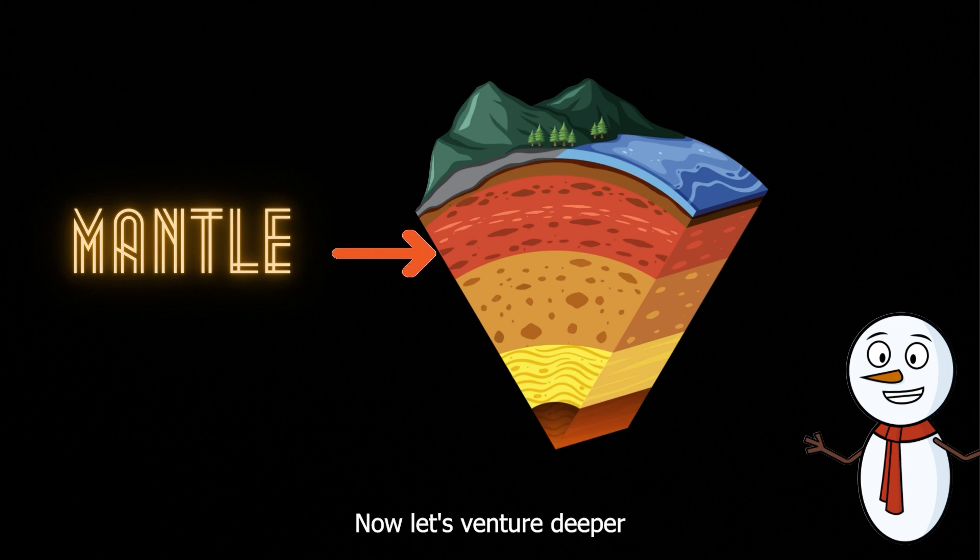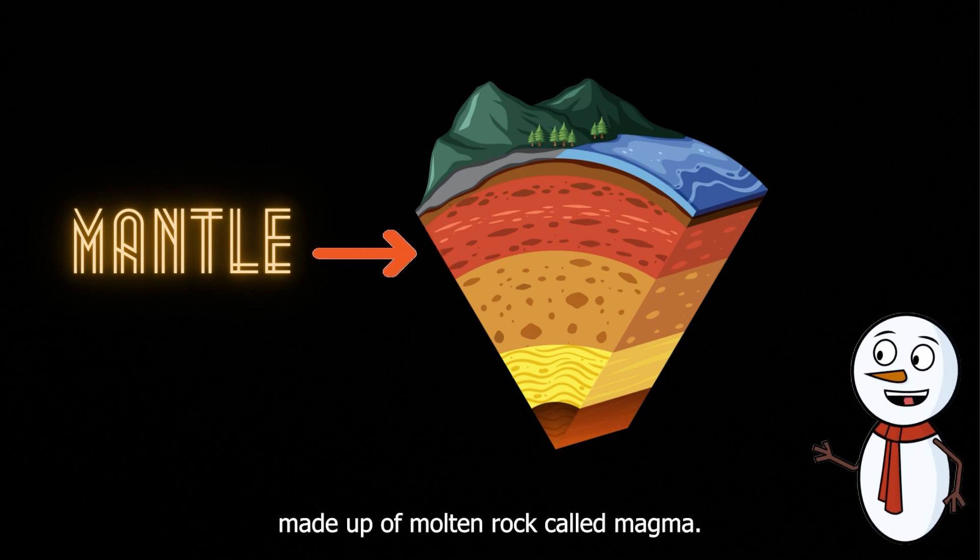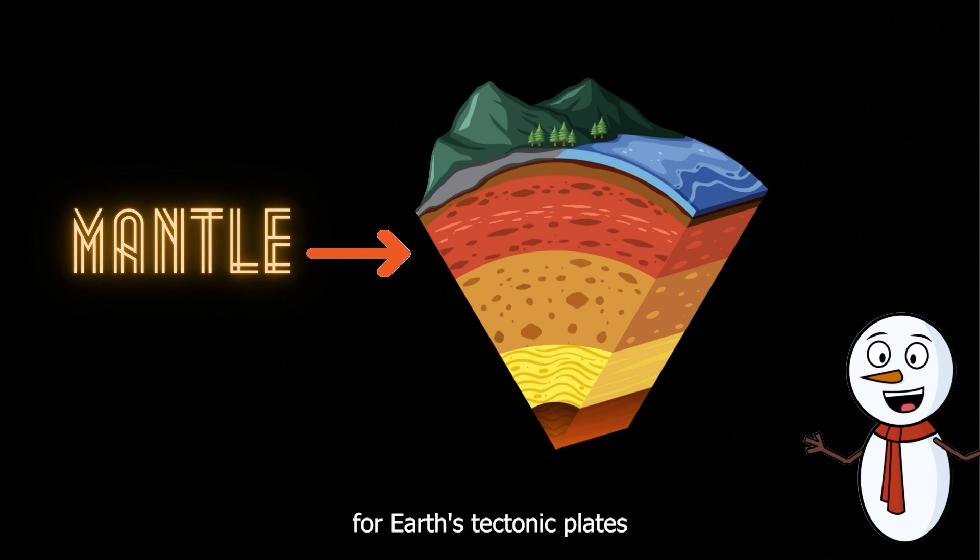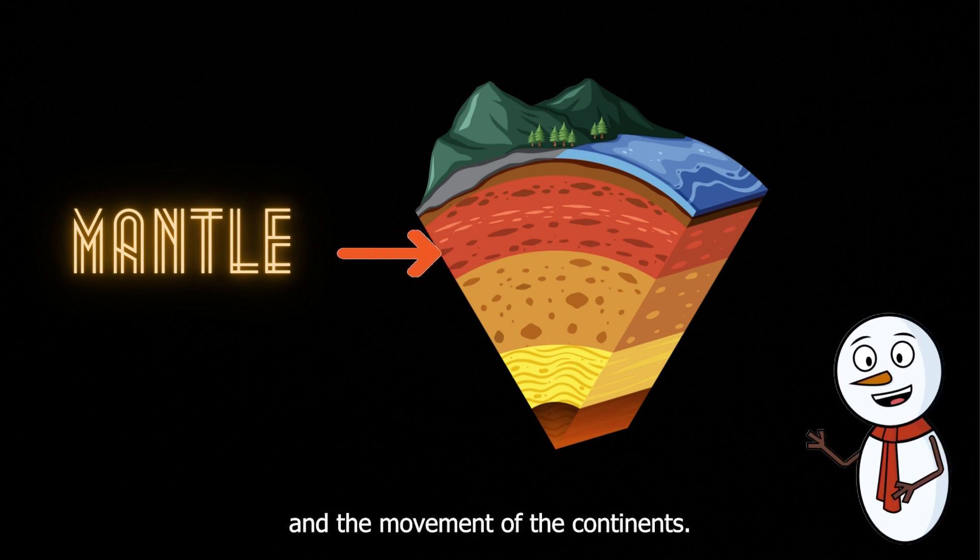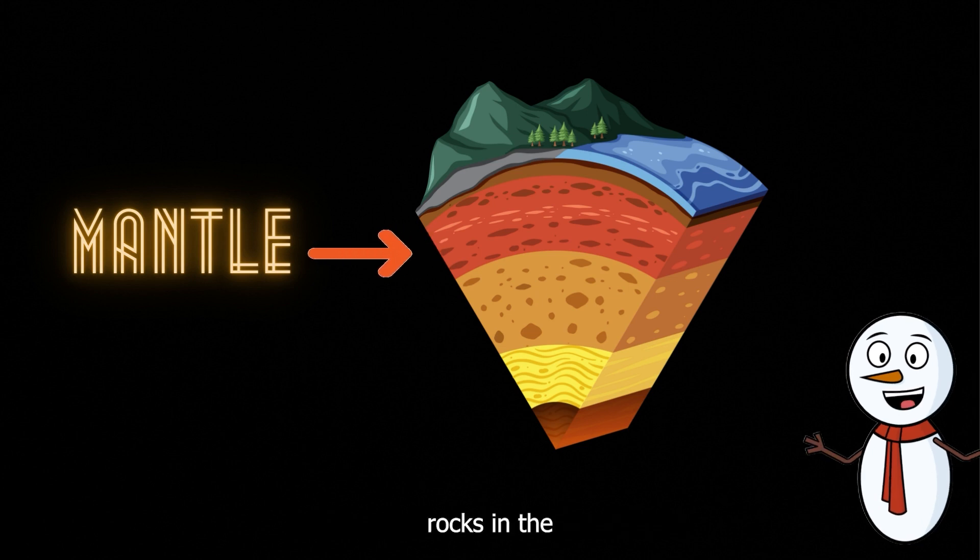Now, let's venture deeper into the Earth's mantle. The mantle is like Earth's hot middle layer, made up of molten rock called magma. It's responsible for Earth's tectonic plates and the movement of the continents. It's so hot that rocks in the mantle can flow like plastic.